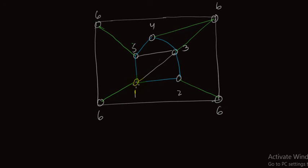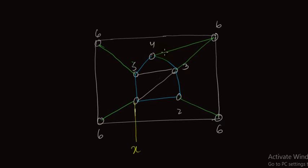Vertex 1 is connected to 2, to 5, to 6, and to 3, but there is no connection yet between 1 and 4. We need a connection between 1 and 4. So I draw an edge — call it edge x — and from the other side I draw another edge also called edge x. Remember, this is one single edge. When we fold this plane, this edge will meet that edge.